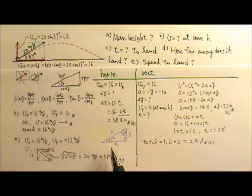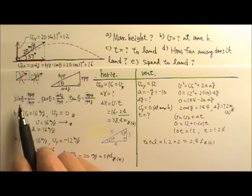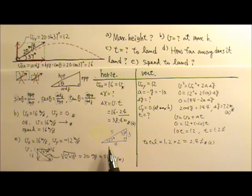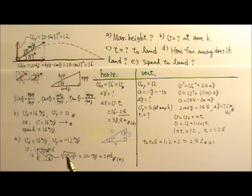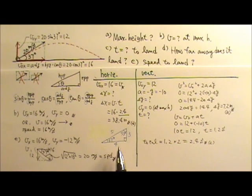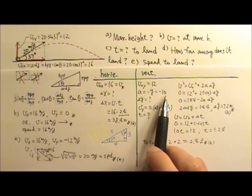One last thing: a right triangle with 37 and 53 degrees is a 3-4-5 triangle, which means sine and cosine will give simpler numbers. Sine 37° = 3/5 and cosine 37° = 4/5. You should expect to see 37 and 53 degrees frequently in this course — when you see those angles, the problem intends for you to have simpler numbers to work with, so go ahead and round g to 10.